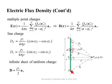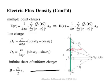We previously obtained an expression for the field from a linear charge of finite or infinite length. The expression for D is the same as for E but with epsilon removed from the denominator. Similarly, for an infinite plane with uniform surface charge ρ_S, E was equal to ρ_S over 2ε in the normal direction. D does not have epsilon in the denominator, while E does — that is the key difference between D and E.